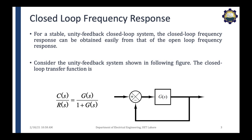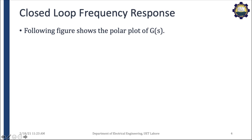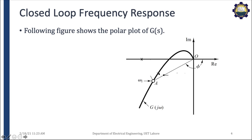Consider the unity feedback system shown in this figure. Its closed loop transfer function is given by this equation, where G(s) is the open loop transfer function or the transfer function of your plant. Now let us look at the closed loop frequency response. The polar plot of the transfer function G(s) is given by this figure. When you change the frequency omega, the magnitude and the phase of your transfer function G(s) are changing, and you can evaluate the magnitude of the transfer function at any frequency.